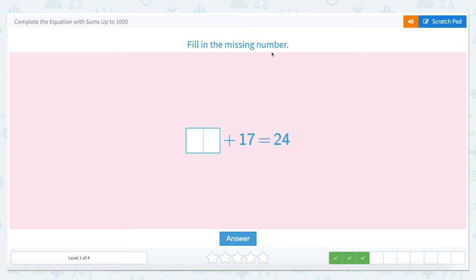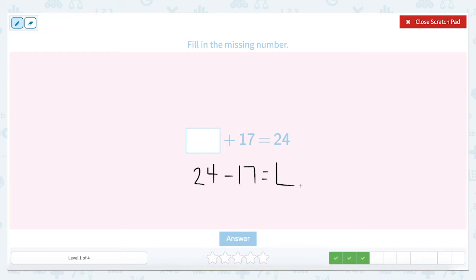Now let's fill in the missing number. We have something plus 17 equals 24. If you're thinking we should rewrite this as a subtraction problem, you are correct. Let's write this as 24 minus 17 equals blank. And if I want, instead of having to subtract, I could easily just count up. So if I'm at 17, I need 3 more to get to 20 and 4 more to get to 24. So 3 plus 4 is going to give me 7 here. So 7 plus 17 equals 24.